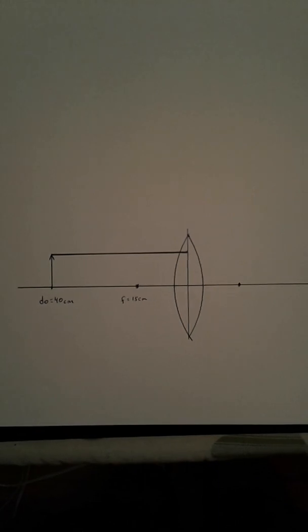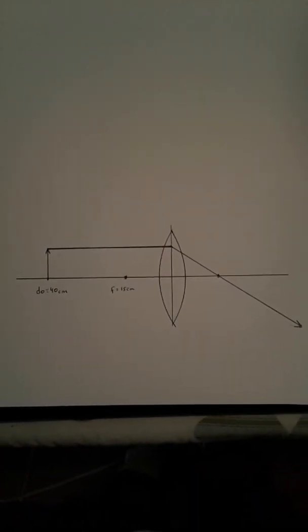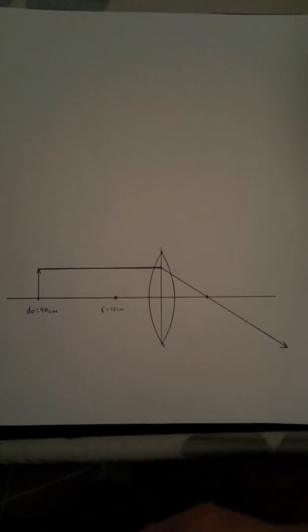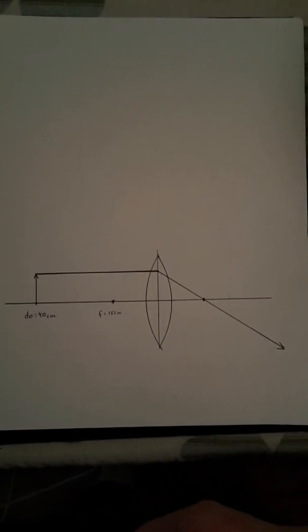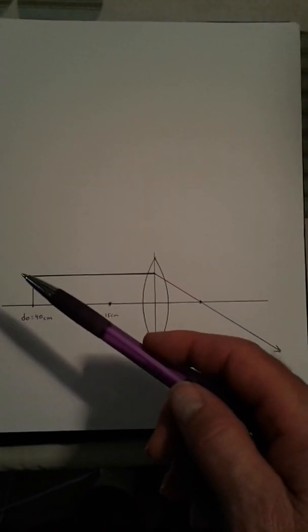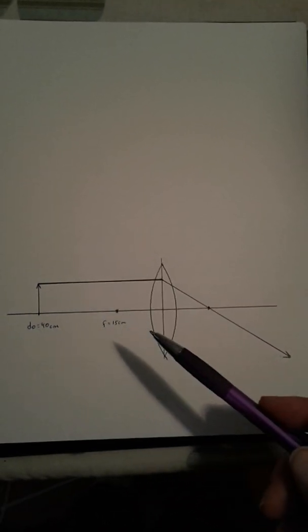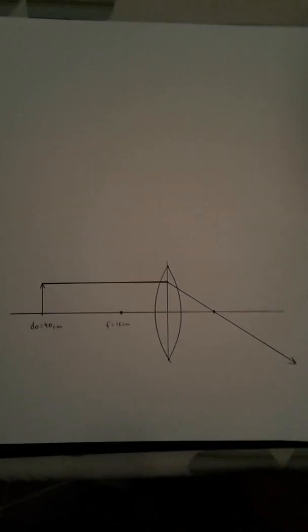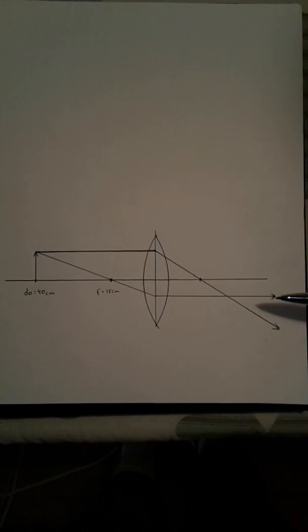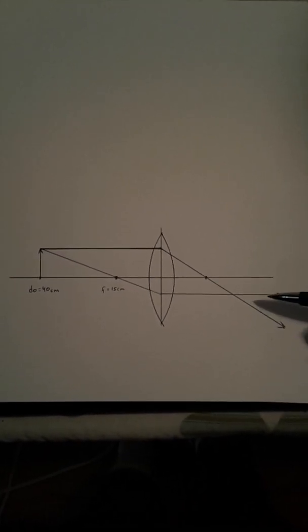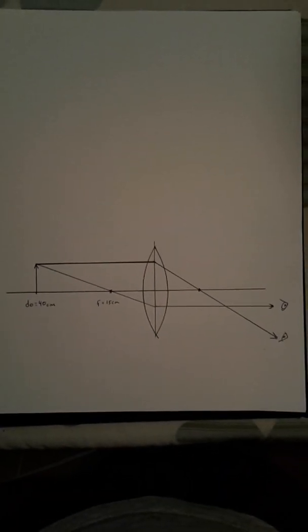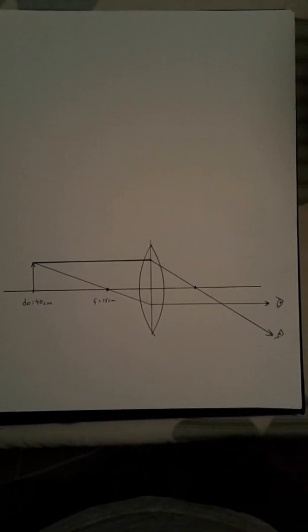In parallel, out through the focus. Now there's an infinite number of light rays that are spreading out from the tip of the arrow. All I need to do is draw one more ray and I want to draw an easy one. So that'll be the one that goes from the tip of the arrow through the focus and then out parallel. If I put my eyes over here, I'm going to believe these light rays spread out from the point of intersection.